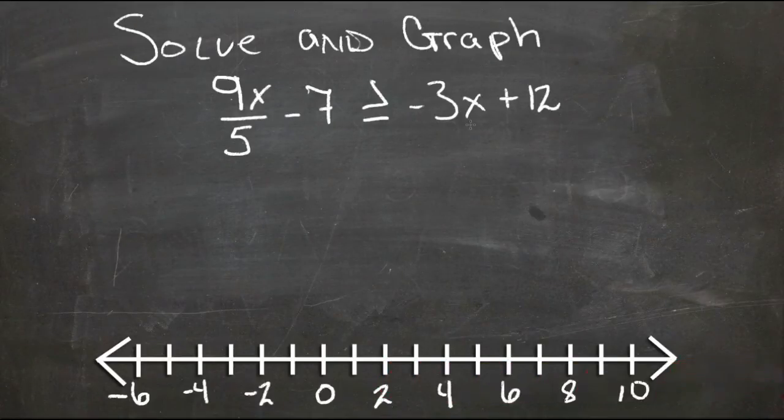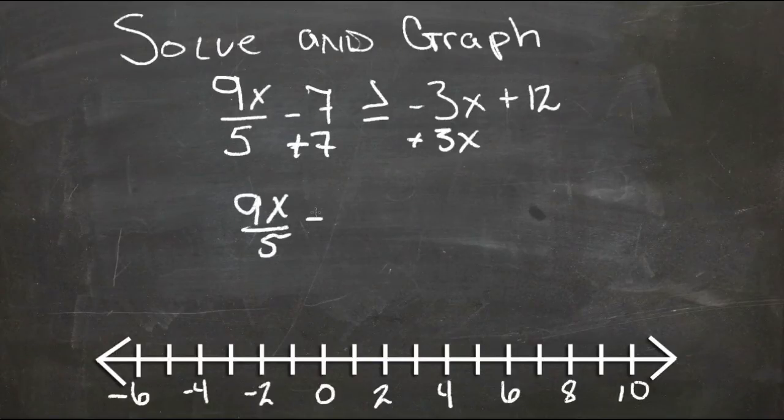So that would give us a total of plus 7 here, plus 3x here, gives us 9x over 5 plus 3x is greater than or equal to 19.